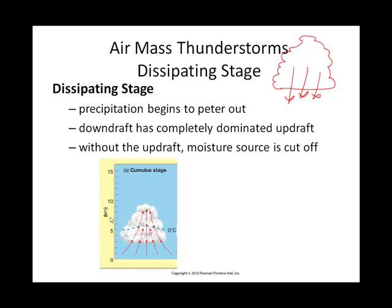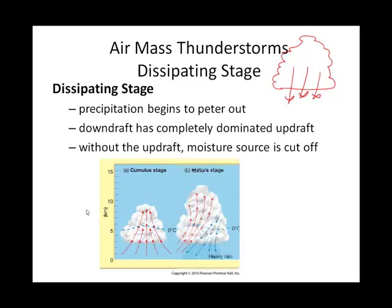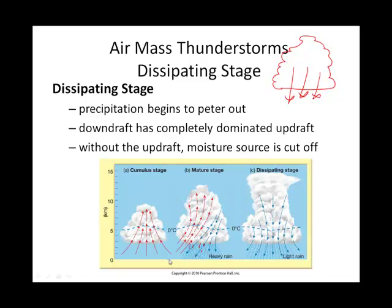From your textbook, going from left to right, you can see the three stages of a typical thunderstorm cell: the cumulus stage, then the mature stage where we have both the updraft and the downdraft with precipitation associated with the downdraft, and then the dissipating stage where it's all downdraft.